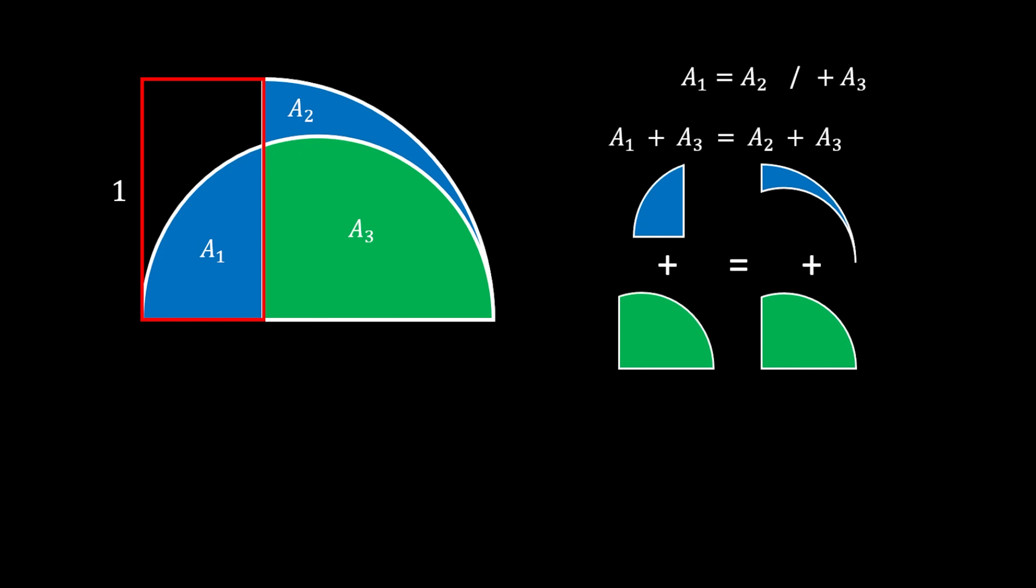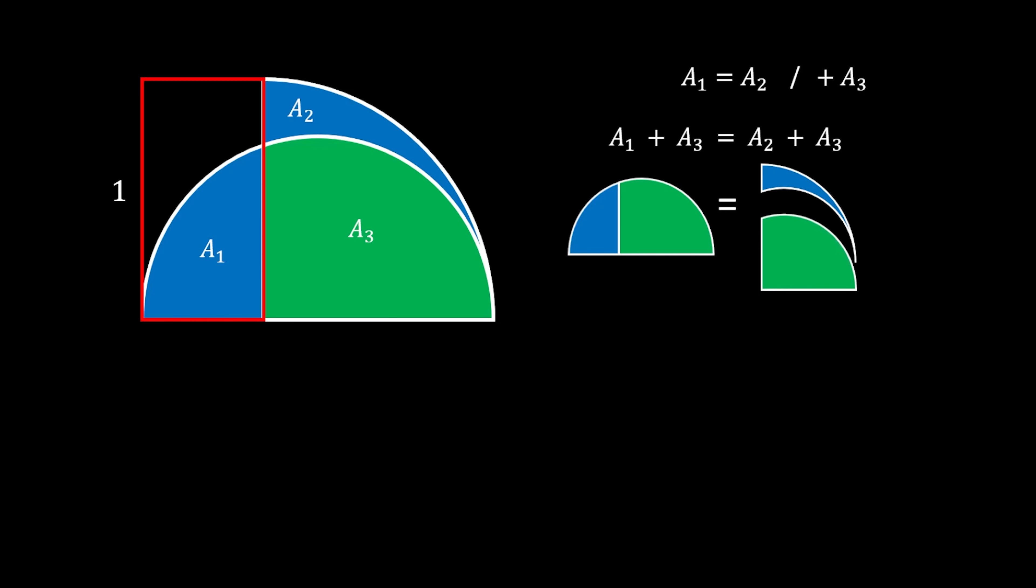The magic happens when we combine these areas together. If we combine area A₁ and A₃, we get the half circle. If we combine areas A₂ and A₃, we get the quarter circle.